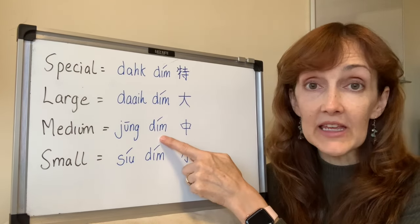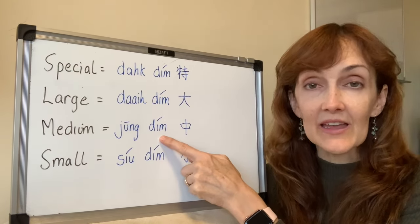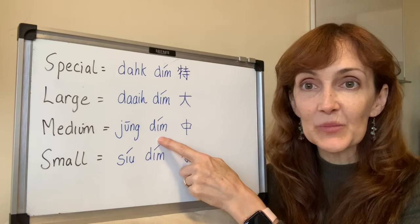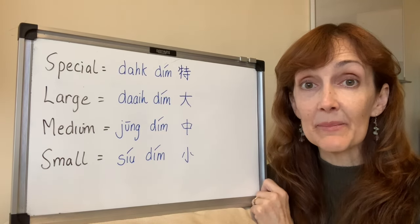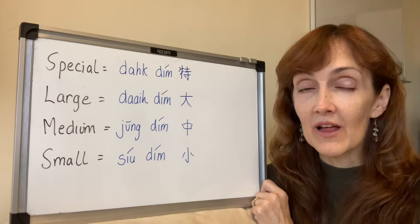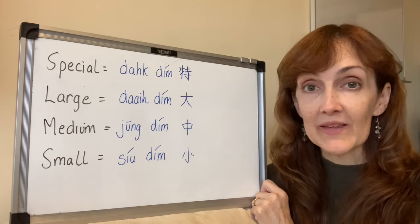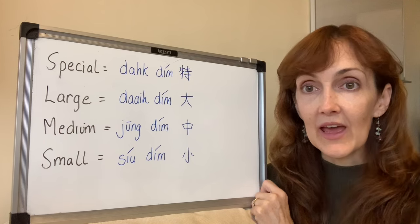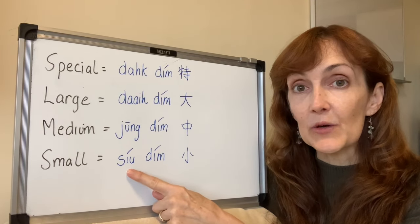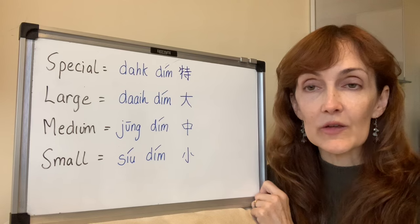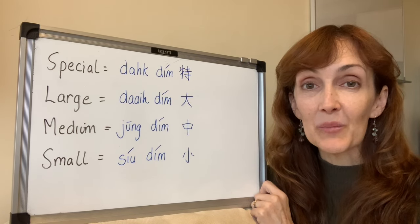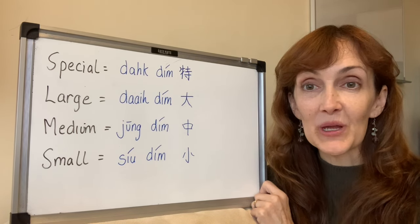Then you've got medium — again, not in size, but in price. The mid-range price is going to be your 中點 (zhong dim). Zhong means medium or middle, so zhong dim are your mid-priced items. And then you've got 小點 (siu dim). Siu means little or small, so the smallest — again, not in size but in price — are your siu dim.